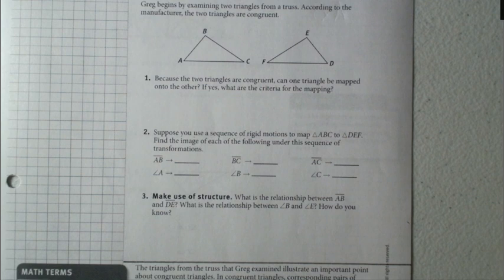Number two, suppose you use a sequence of rigid motions to map triangle ABC to triangle DEF. Find the image of each of the following under this sequence of transformation: AB goes to, BC goes to, AC goes to, angle A goes to, angle B goes to, angle C goes to.